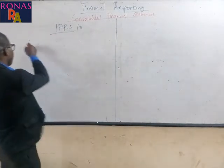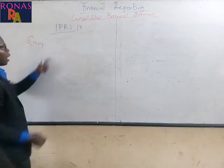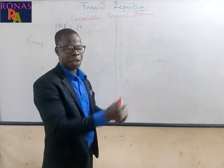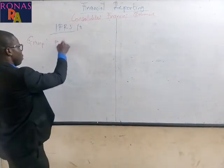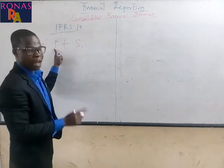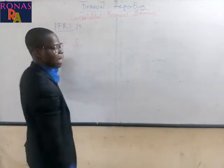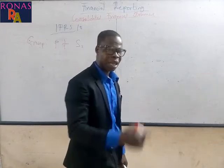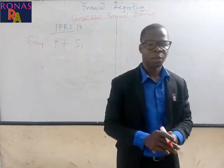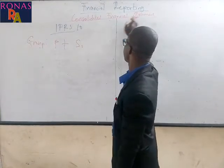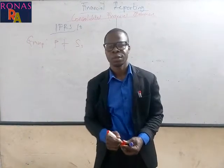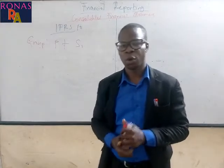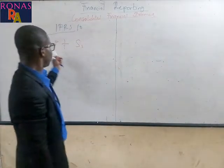The first key term is group. What is a group? According to IFRS 10, a group simply means a parent plus one or more subsidiaries. So we have one parent and more than one subsidiary can exist. These come together to form what we call a group. That is why sometimes the consolidated financial statement is referred to as group accounts.